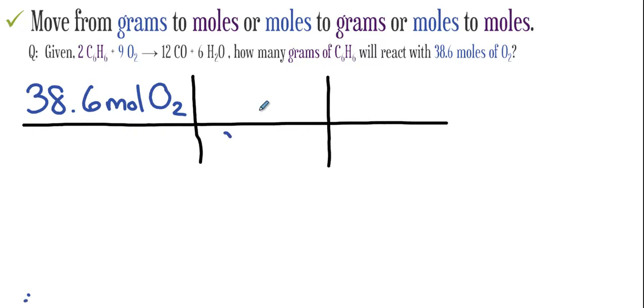Here we'd like to go to a different compound. We'd like to go to C6H6. We'll use the mole ratio found in the balanced chemical equation, which shows us that there are two moles of C6H6 for every nine moles of oxygen.